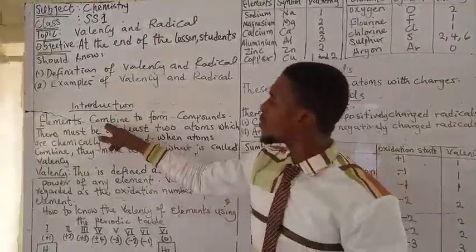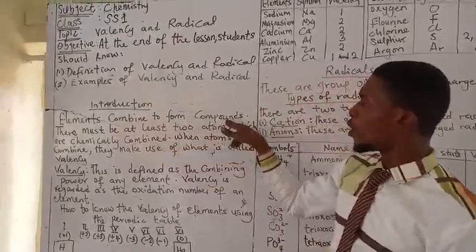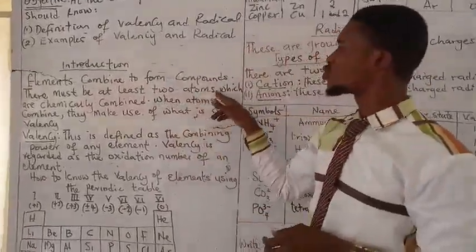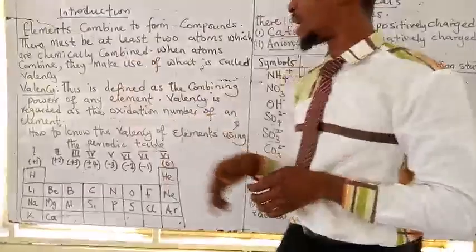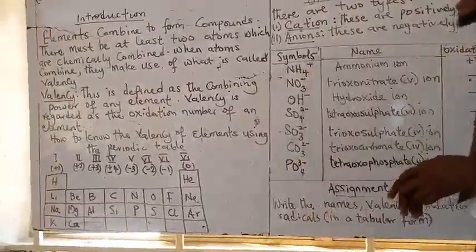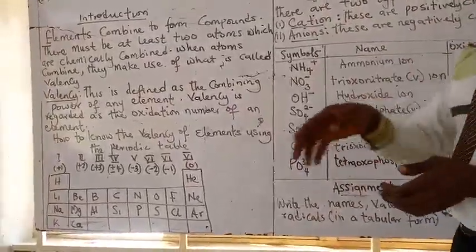When elements combine, they combine to form compounds. There must be at least two atoms which are chemically combined. So that means valency is important in the formation of a compound.